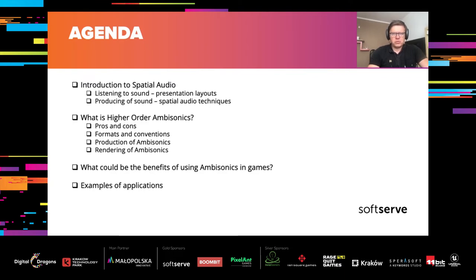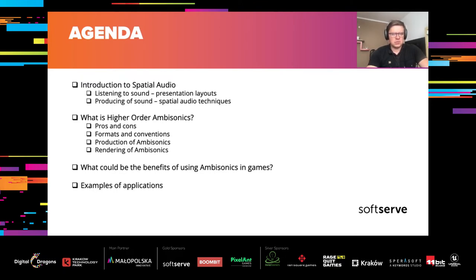Here is the agenda of my presentation. I will start with a short description of well-known spatial and non-spatial audio techniques, focusing on two aspects: presentation layouts — how sound can be reproduced and delivered to our ears — and production of audio, meaning what techniques are used to produce spatial sound and what its representation looks like. The core of the presentation is the definition of higher-order ambisonics, covering its pros and cons, formats and conventions, how to produce and render ambisonics content, and its place in game audio. I will also include sound examples and demos.